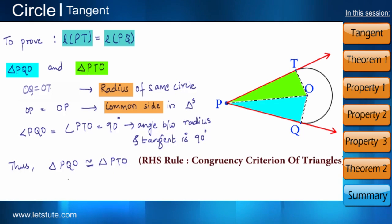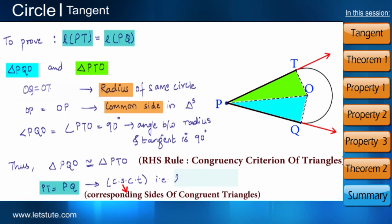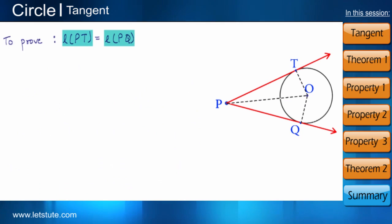Now since both the triangles are congruent, we can say that PT is equal to PQ. That is, the length of PT is equal to length of PQ. This proves that two tangents drawn from an external point, their lengths will be equal. The above statement can also be proved using Pythagoras theorem.